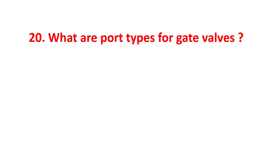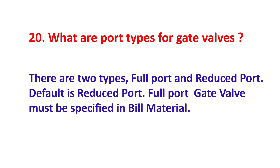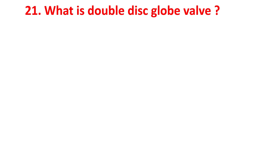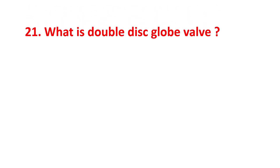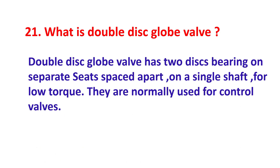What are port types for gate valves? There are two types: full port and reduced port. The default is reduced port. Full port gate valves must be specified in bill of materials. What is a double disc globe valve? A double disc globe valve has two discs bearing on separate seats spaced apart on a single stem. They are used for low torque control valves.